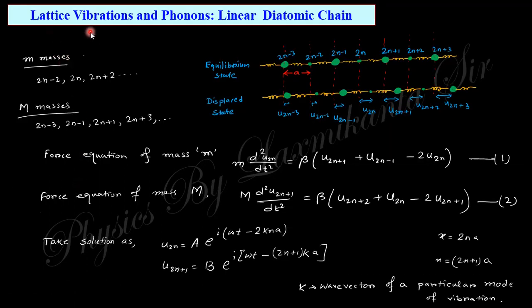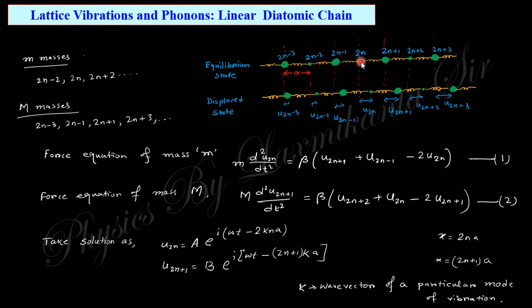In the previous lecture we discussed the monoatomic chain — the same-mass chain — where we took displaced positions, applied Newton's law, and solved the equation. Here we take the diatomic chain, meaning there are two defined masses: capital M and small m. If we take the 2n-th atom of this chain, then we have 2n−1, 2n−2, and so on, as well as 2n+1, 2n+2, and so on.